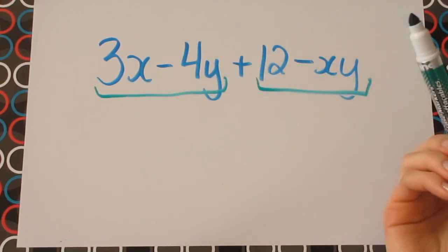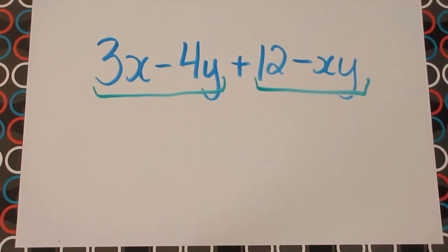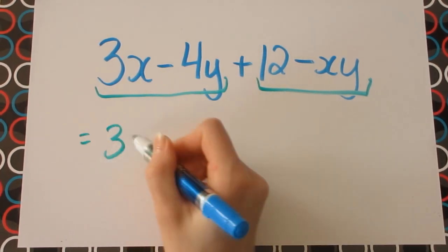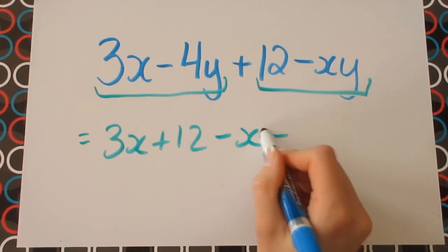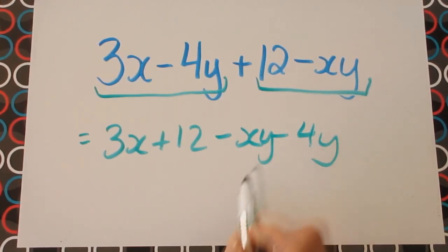And the same goes for the second two terms. We can rearrange them to get 3x plus 12 minus xy minus 4y. And since we've seen that example, we know that it can be factored. So this is just a little thing to look out for.